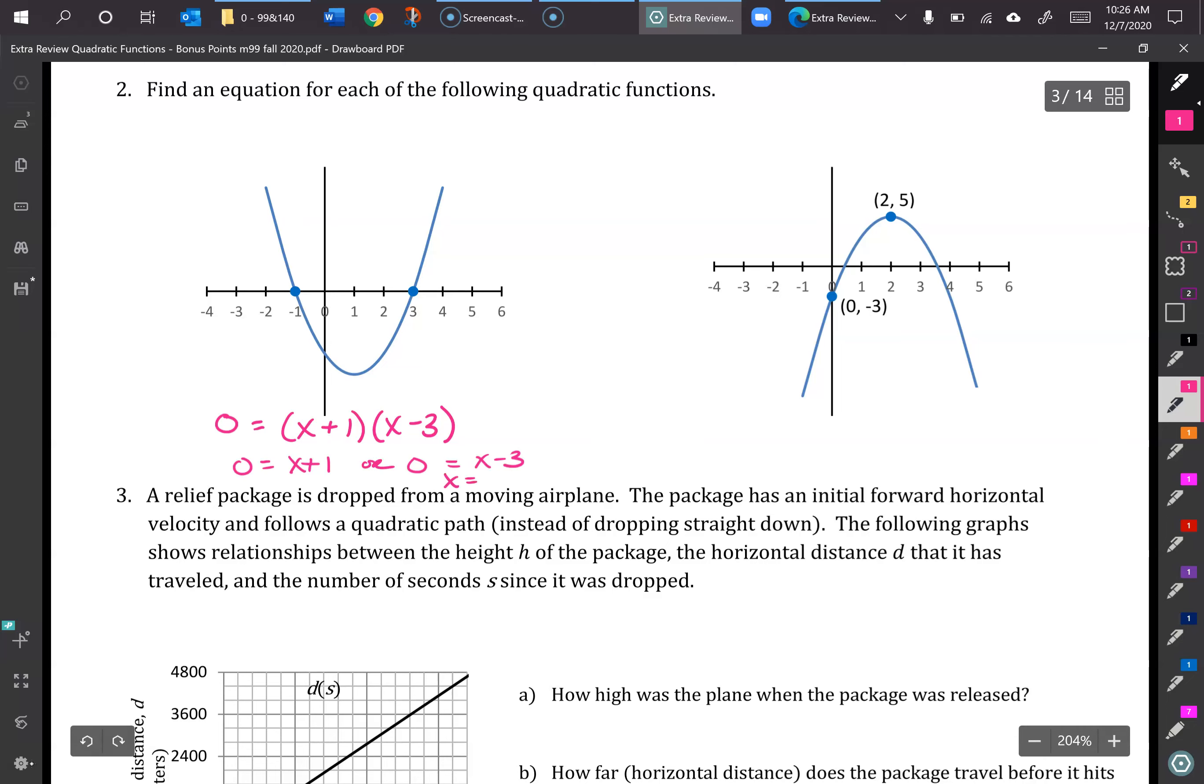Therefore, x would be 3, or x would be negative 1. And what that means is the point right here, negative 1, 0 that we see, and also the point 3, 0. So that's where that comes from.